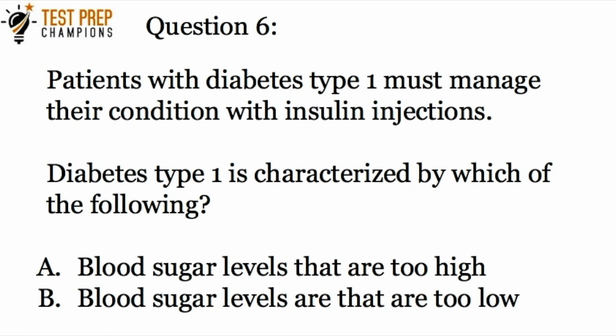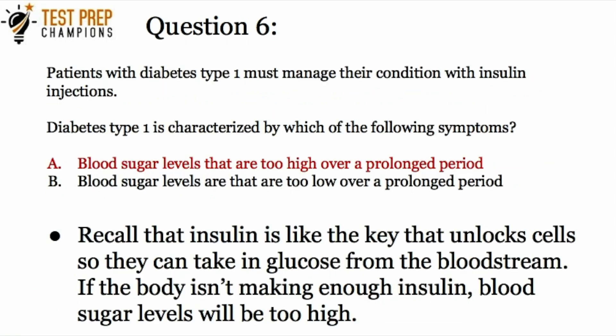Question six: patients with diabetes type 1 must manage their condition with insulin injections. Diabetes type 1 is characterized by which of the following — blood sugar levels that are too high, or blood sugar levels that are too low? The answer is A. Remember, insulin is the key that unlocks cells so they can take in glucose from the bloodstream. If the body is not making enough insulin, the glucose isn't stored and blood sugar levels stay high.